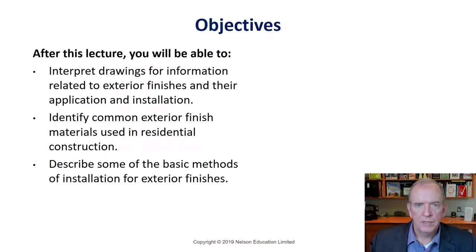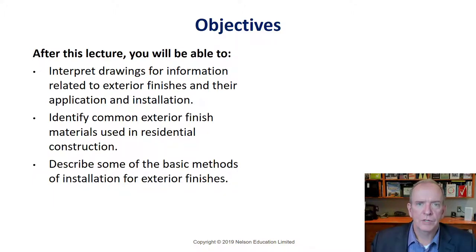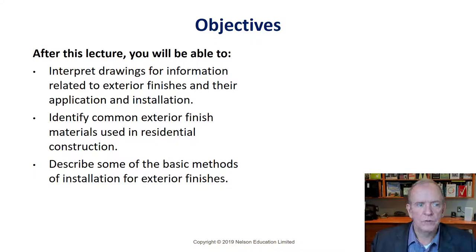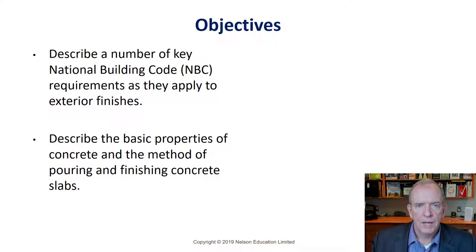In this lecture, we're going to be looking at all the different finishes that you see in residential construction. There are a lot of different ways that we can finish the envelope of our building, and the envelope is the separation between conditioned space and unconditioned space, or inside and outside. We'll also talk about a number of NBC and OBC — National Building Code and Ontario Building Code — requirements as we go through this.